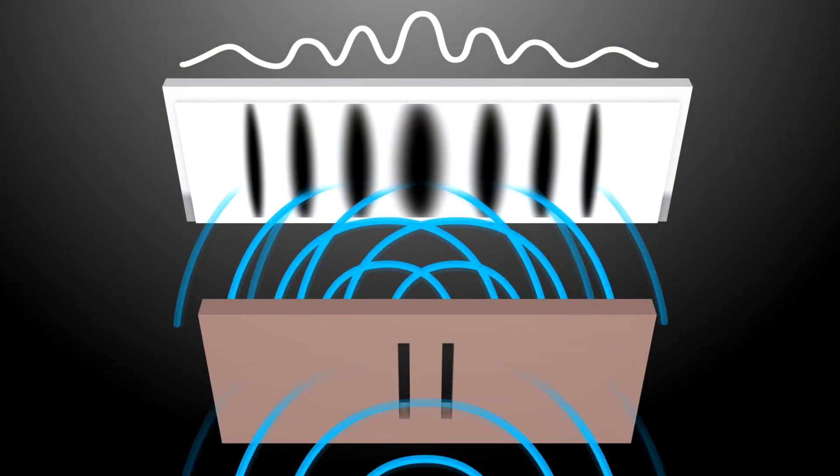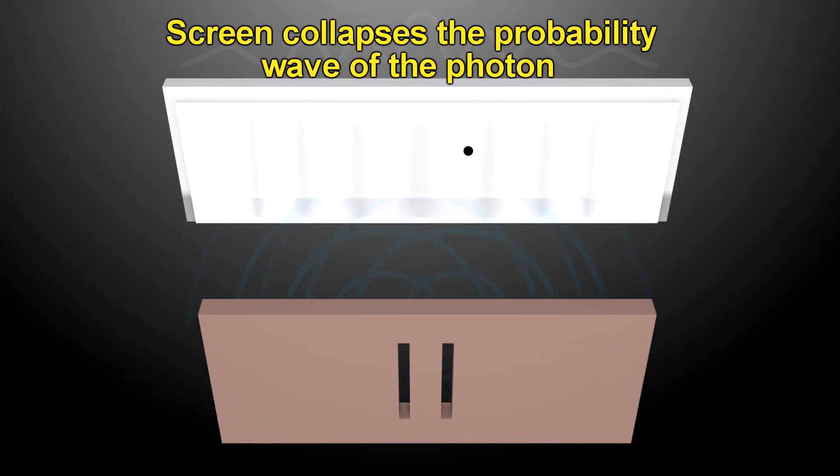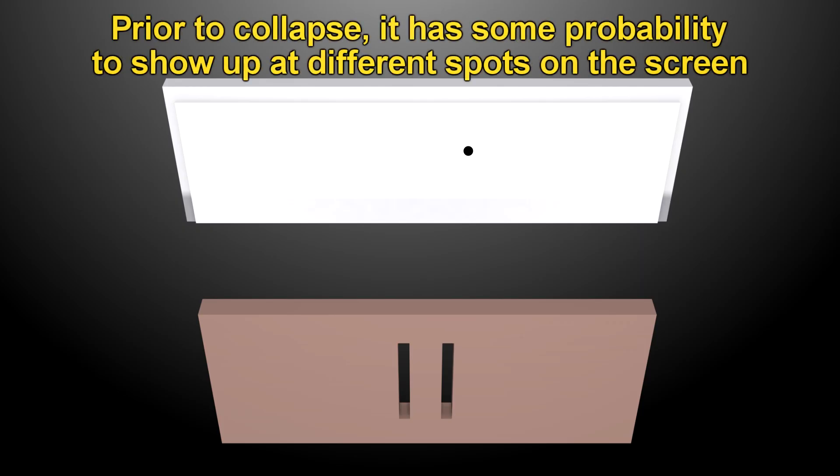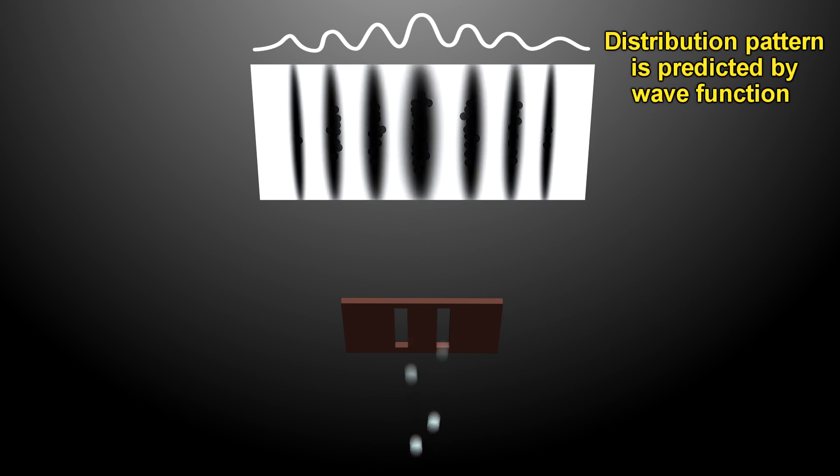So let's get back to the double slit experiment and figure out what it means. When a single photon hits the screen, it collapses the probability wave of the photon. It shows up as a particle. That same photon is acting as a wave prior to hitting the screen, because it hasn't been measured yet. The screen measures it. So as a wave, it has a non-zero probability to show up anywhere on the screen, where the wave would strike the screen. So as we shoot thousands and millions of photons, one at a time, on the screen, the probability distribution becomes apparent in the pattern shown. If enough photons are fired, you get a distribution exactly as predicted by the wave function.